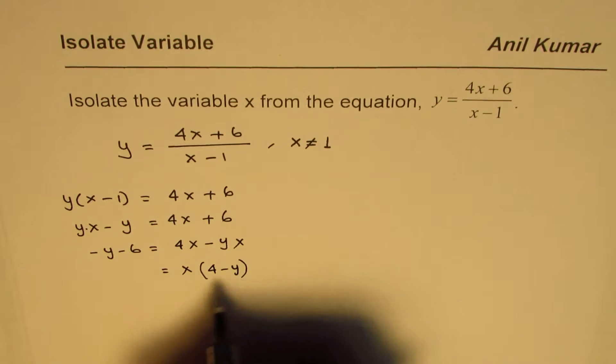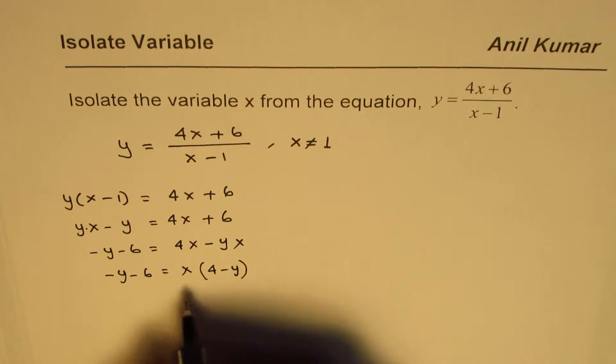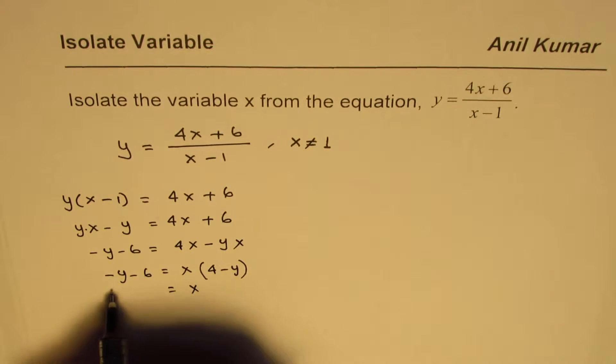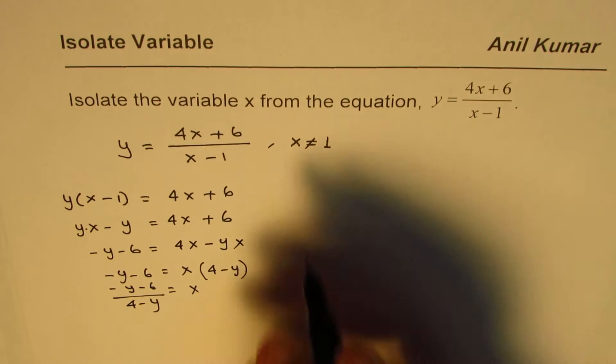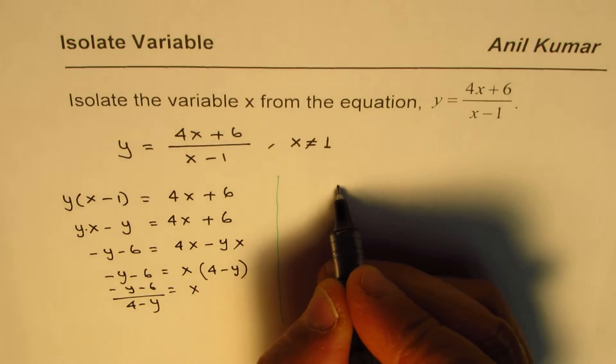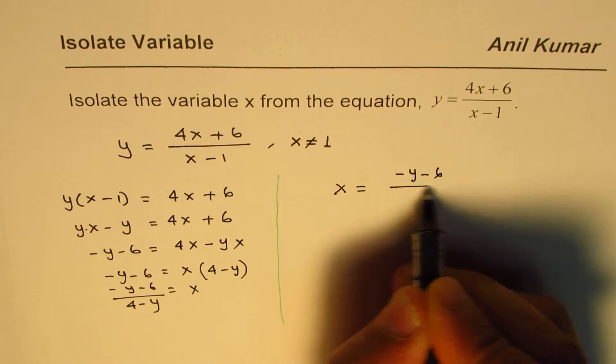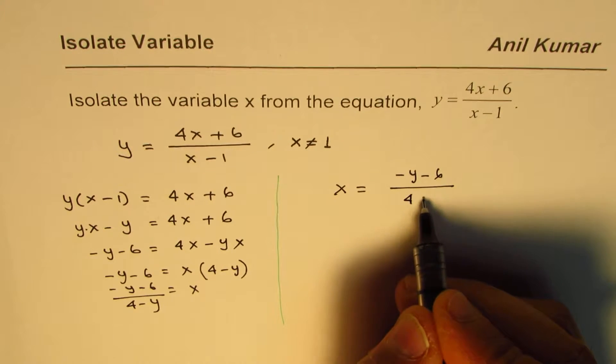So we get 4 minus y times x equals minus y minus 6. Now we can write what x is, which is minus y minus 6 over 4 minus y. Let me rewrite the expression: x equals minus y minus 6 over 4 minus y.